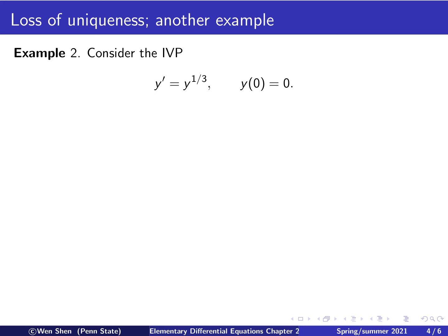So here's the initial value problem. We have y prime equal y to the power one third, and the initial condition is y zero equals zero.